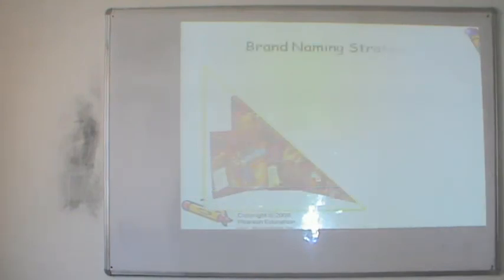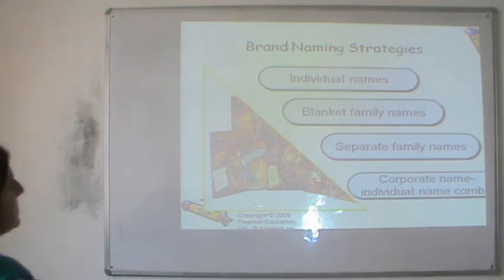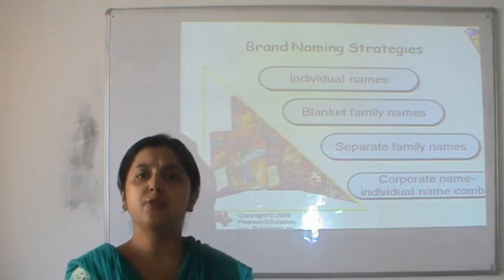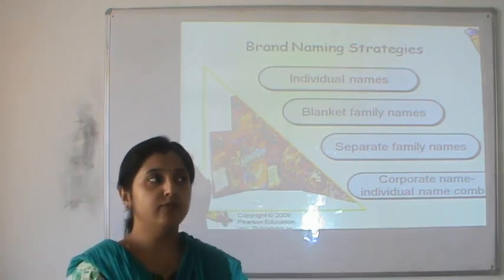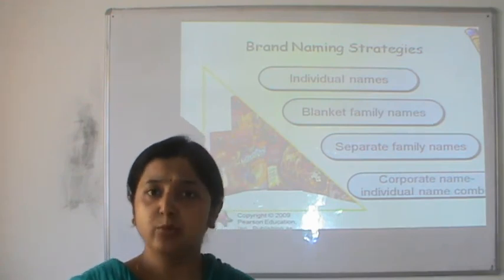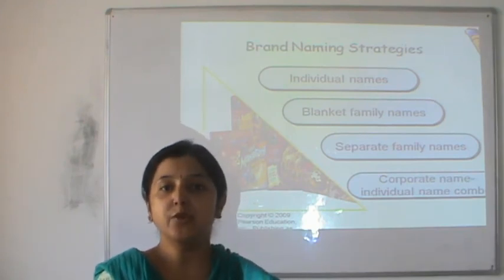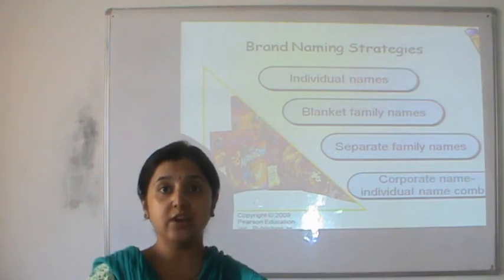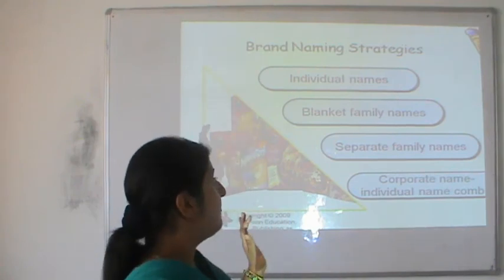There are four common strategies for naming a brand. The first is the individual brand name — the company gives different names to different brands. For example, Unilever's soaps each have their own name: Dove, Lux, Pears, Lifebuoy. The second is the blanket family name — the company uses the family name across all product types. Nike sneakers, Nike joggers, Nike shoes, Nike accessories, Nike handbags, Nike duffel bags — Nike is the blanket family name. Adidas uses a similar approach. The third is separate family names for different product categories, as in the case of Reliance: Reliance Communications for mobile services, Reliance petrol pumps for petroleum, Reliance Money for investments, and Reliance Insurance for insurance.